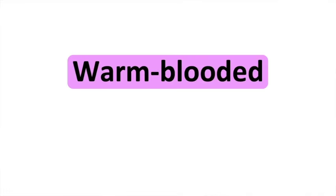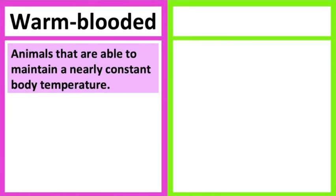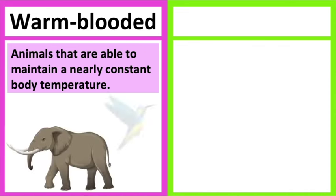Warm-blooded animals are able to maintain a nearly constant body temperature regardless of the temperature of the environment. Mammals and birds are warm-blooded animals. When the environment is cold, warm-blooded animals generate heat from the energy in the food they consume. When the environment is hot, warm-blooded animals are able to cool down by sweating.